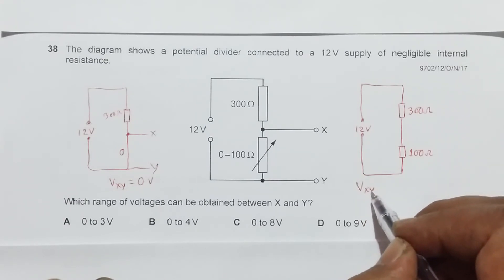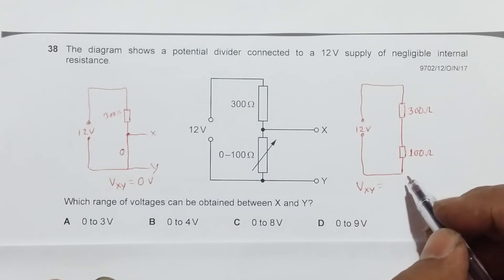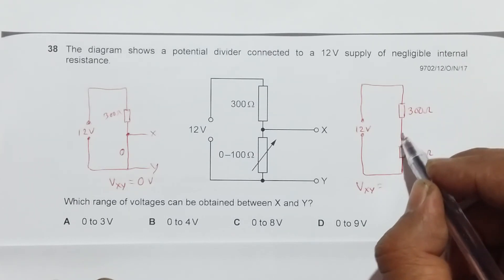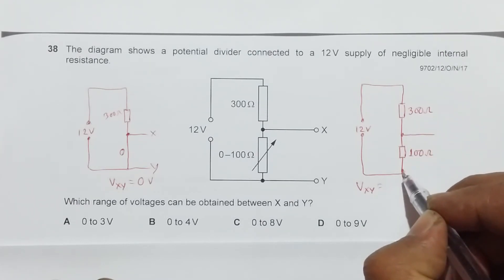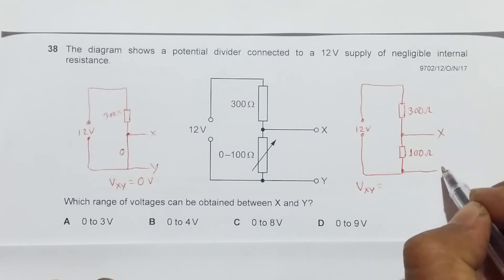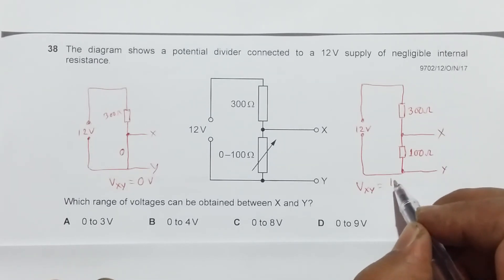Here our VXY will be equal to, if we apply the potential divider formula, it will be equal to - this is X and this is Y - so it should be 100 divided by 100 plus 300 into 12.